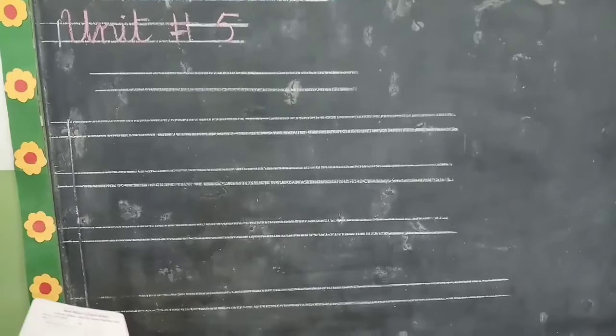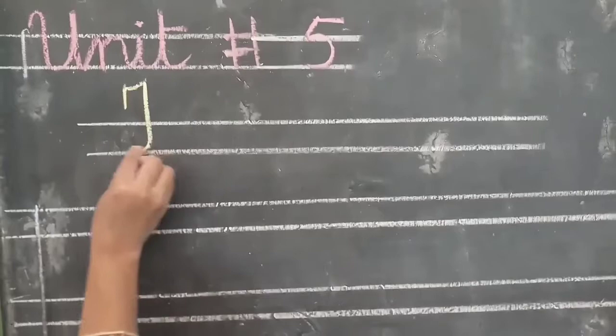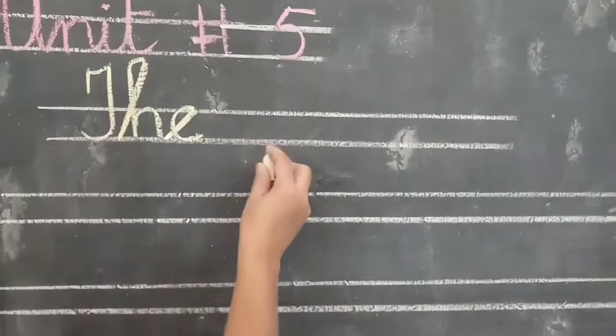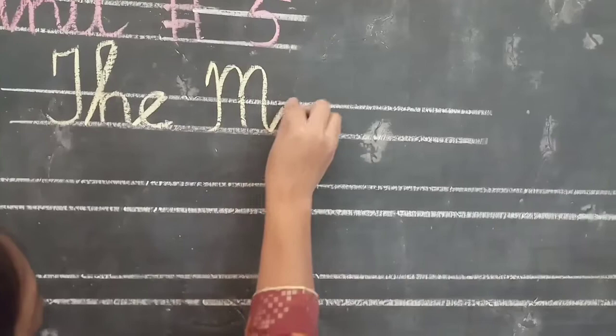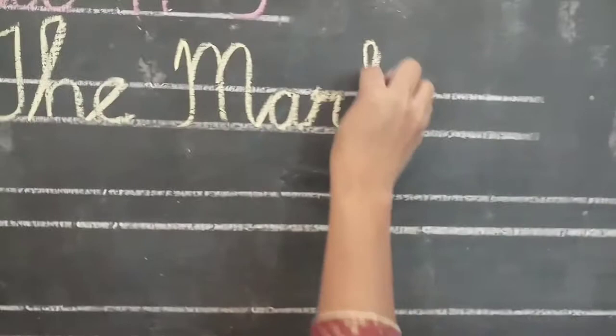So now we are going to our questions. Unit number 5. The topic of our lesson is The Market. Take one finger space and write: Market — M, A, R, K, E, T. The Market.